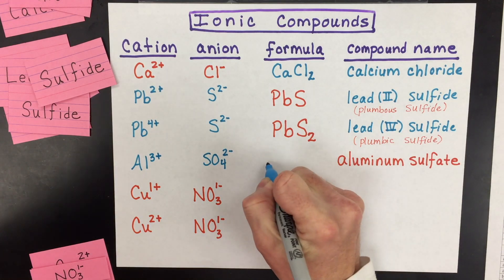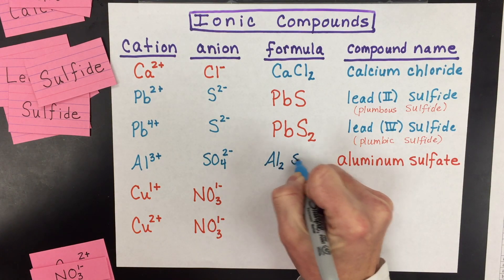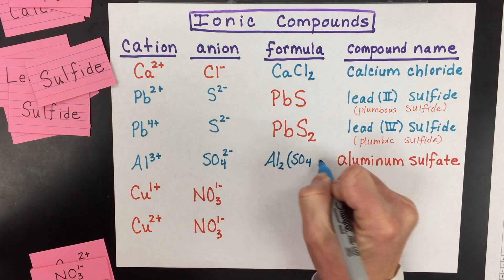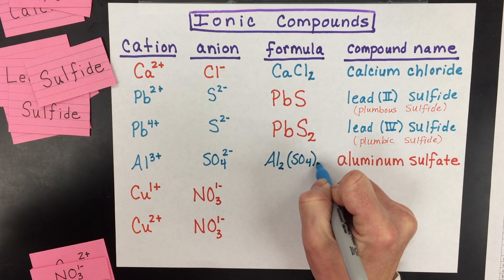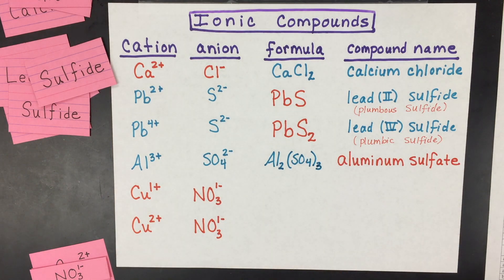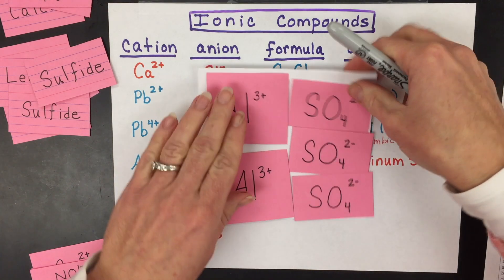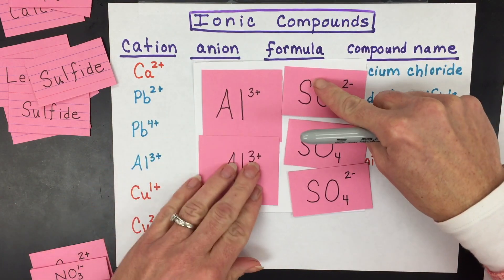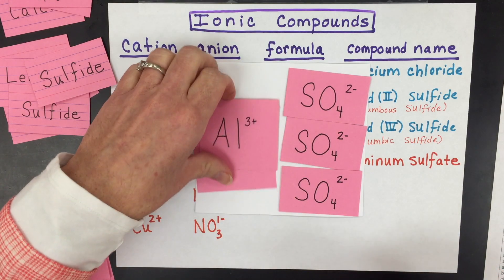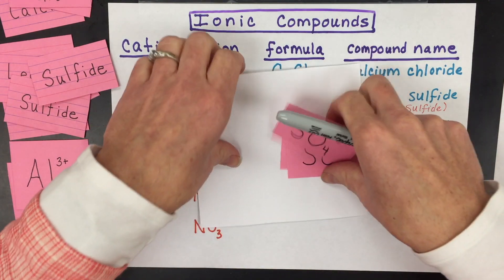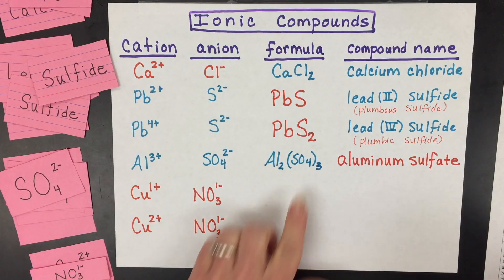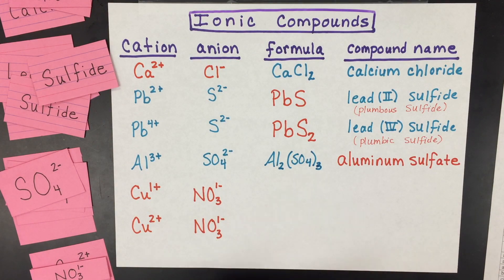So we will need two aluminums, and then we would need three sulfates. So you'll need to put that polyatomic ion in parentheses. Only polyatomic ions need parentheses, not the ions that are monatomic. So you do not need parentheses around the aluminum to say that there's two. You only need parentheses around the sulfate to say how many you have, which in this case is three.